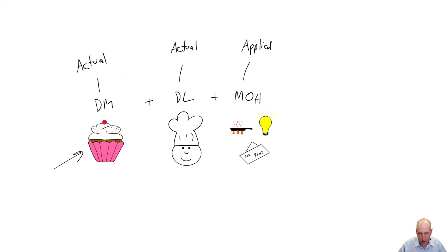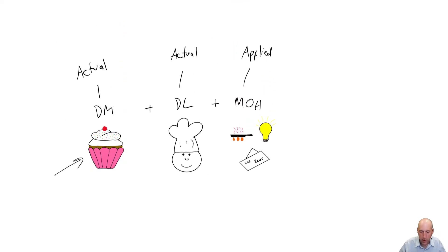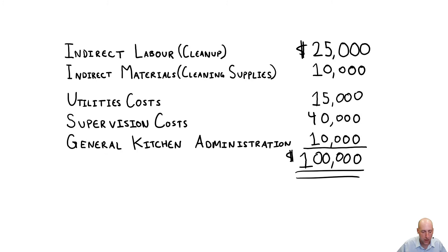So in the traditional method, what we do is we figure out our estimated overhead. So we might have these as our overhead costs. We get an estimated total overhead. We divide that number by an estimated activity. Maybe direct labor hours is something that drives overhead. And we get a predetermined overhead rate.